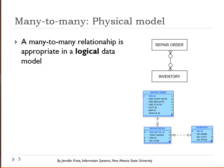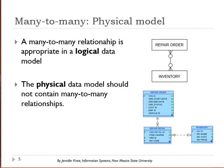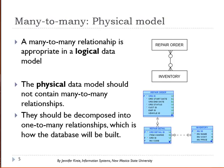A many-to-many relationship is not incorrect — it's appropriate for a logical model. But when you get ready to create the physical model, you have to decompose the many-to-many relationship into its component one-to-many relationships.